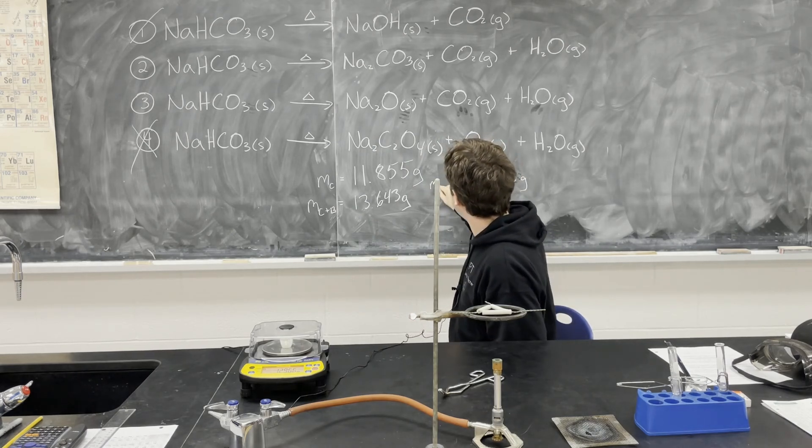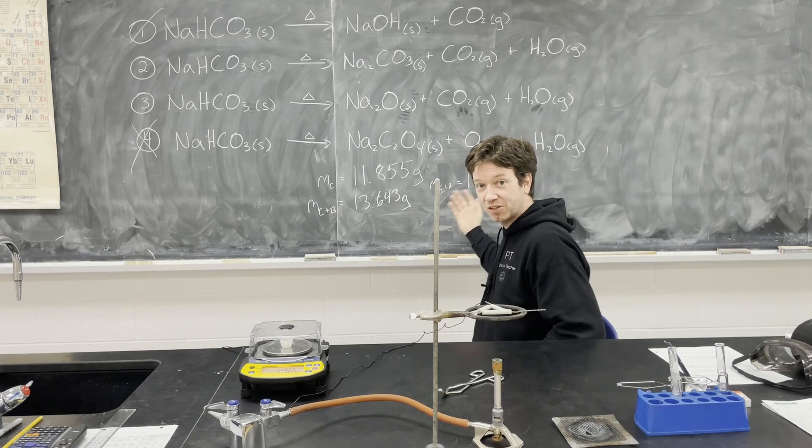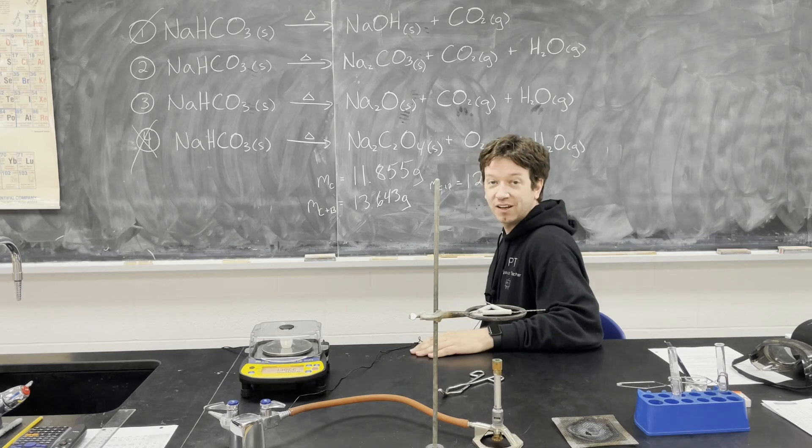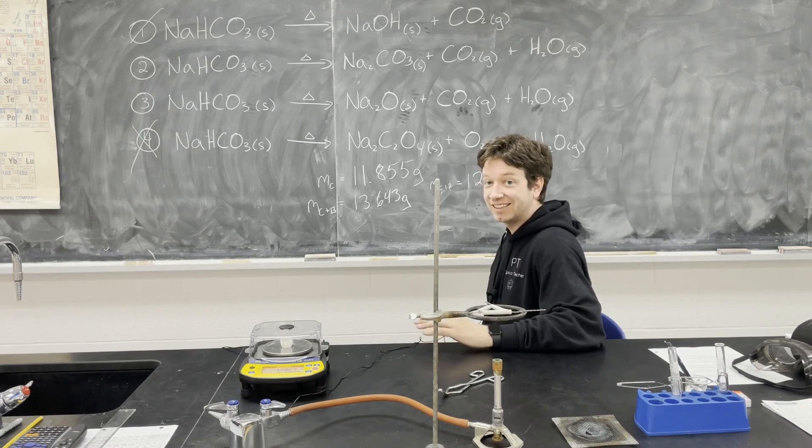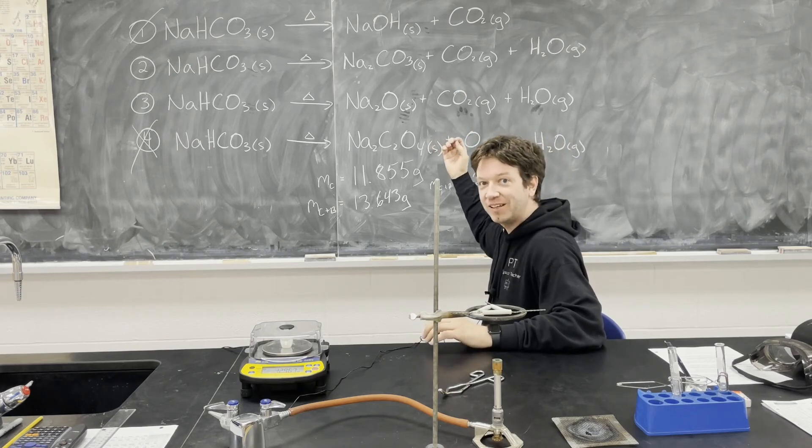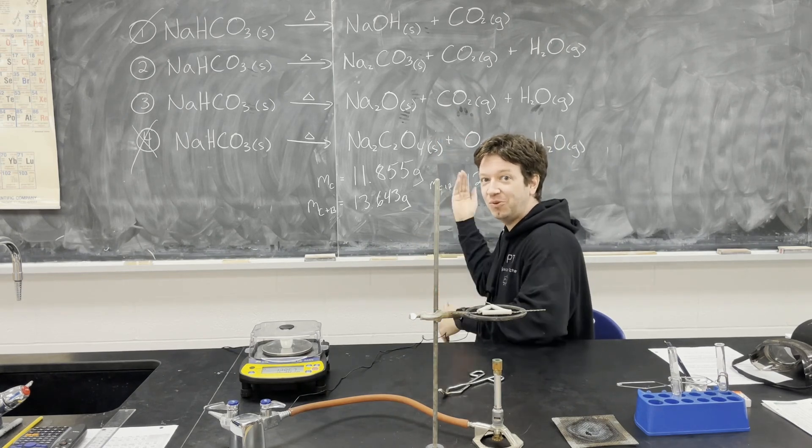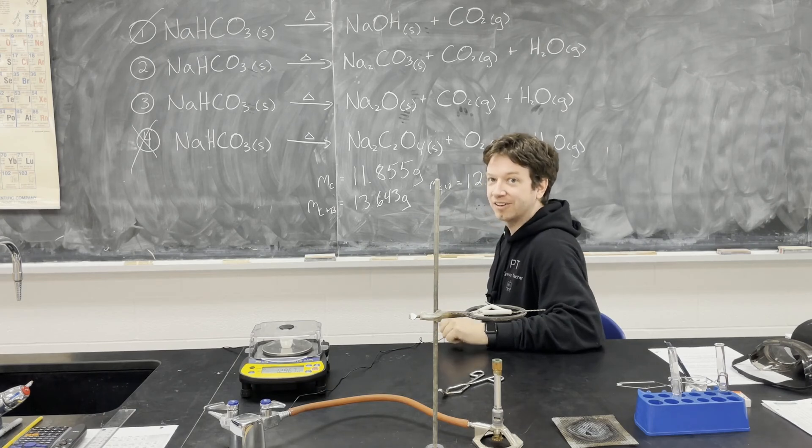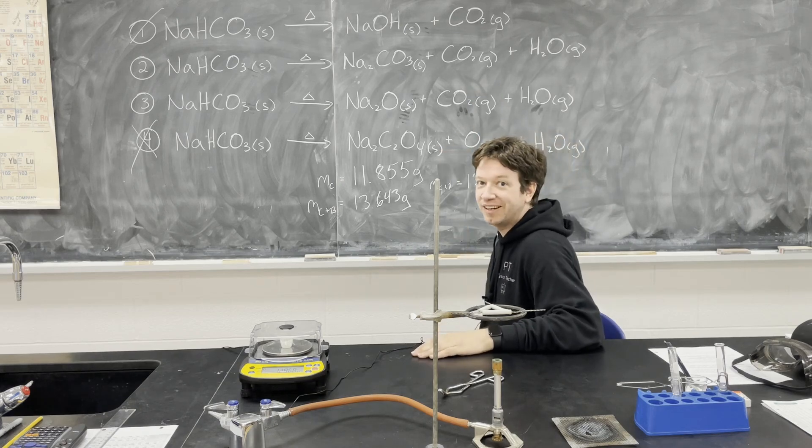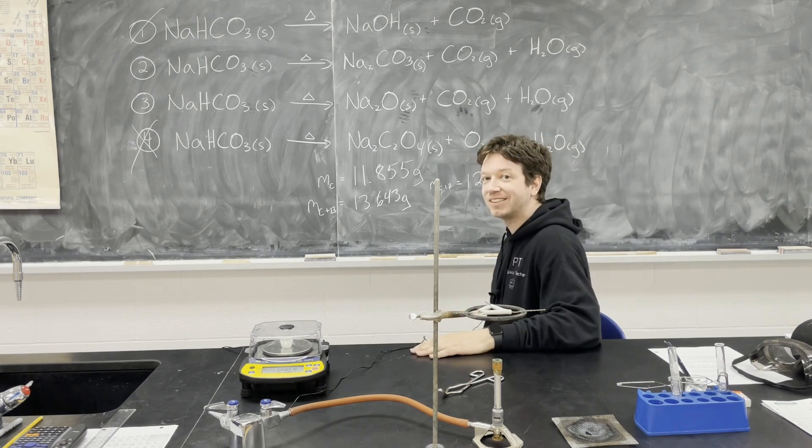And that'll be the mass of the crucible plus our product. So we've clearly lost mass, so you can determine how much mass is in the products, how much mass was in the original reactant, and see which equation closely measures the mass of the product in our experiment to our theoretical calculations in our stoichiometry. Tell me in the comments which equation is the one that best described this reaction. And if you enjoyed that and you want to see more, make sure you subscribe.